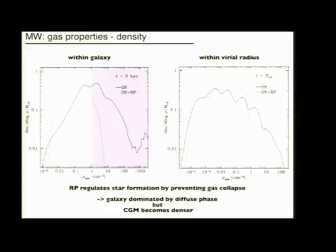This is the density threshold for star formation, and you see that in the case without radiation pressure the gas is allowed to collapse to very high densities. All this gas is forming stars. Radiation pressure is preventing that from happening and it's shifting this gas to a lower, more diffuse component.